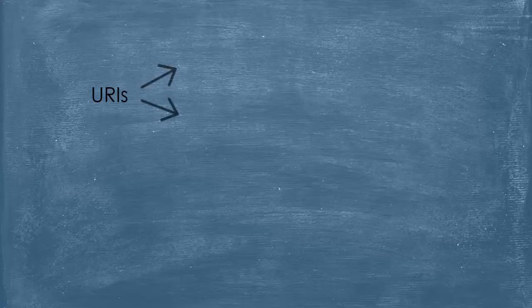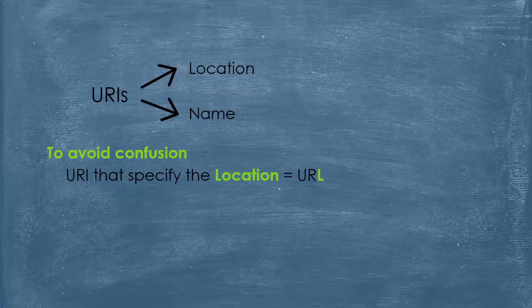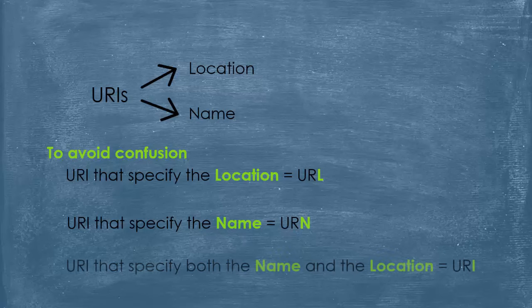Back in the mid-90s, during the creation of web identifiers, URIs were split into two classes: URIs that specify the location and those that specify the name. To avoid confusion about whether a URI is specifying the name or the location, URIs that specify the location were called URLs — Uniform Resource Locators — and that's what we use in web browsers to get a web page. URIs that specify the name were called URNs. An identifier that specifies both the name and the location is called simply a URI.